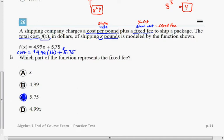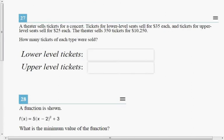Okay, last question number 27. A theater sells tickets for a concert. Tickets for the lower level seats sell for $35 and tickets for the upper level seats are $25. They sold 350 tickets for $10,250. How many tickets of each type were sold? This is a system of equations. They sold 350 tickets and they want to know how many of each type were sold. I'm gonna choose two variables. We need to find two things, so we need two variables. L equals the number of lower level tickets sold, and U is gonna be the number of upper level tickets.